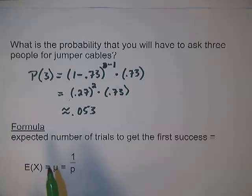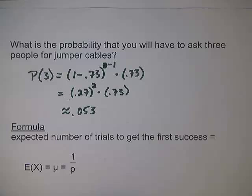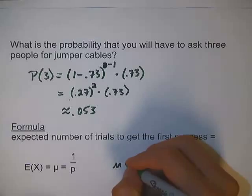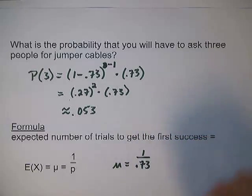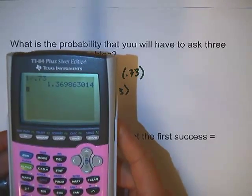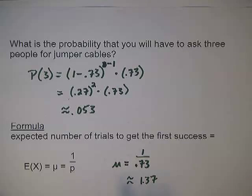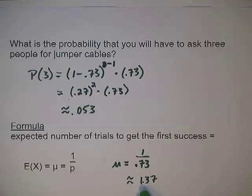The last helpful thing with geometric distributions is figuring out the expected number of trials to get the first success. E(X), also written as mu, represents the expected value or the mean — the average number of people you'll have to ask. This is simply one over the probability of success. So mu equals one over 0.73, which is about 1.37. On average, we'd expect to ask about 1.37 people to get the first pair of jumper cables. You can't ask 1.37 people, but that tells us you'll have to ask either 1 or 2, with 1 being a little more common than 2.